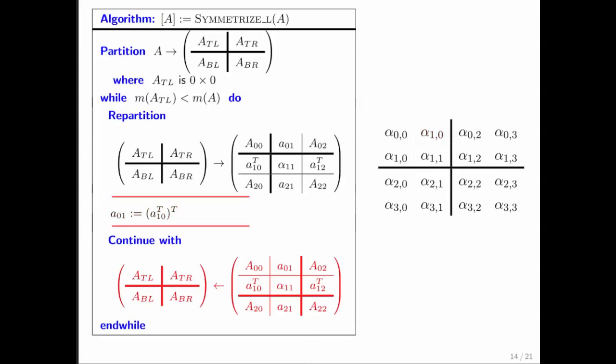Then you move on. You expose again. And now what you notice is that what we would like to do is set this entry equal to this entry, and that entry equal to that entry. Alternatively, you can think of that as this row vector needs to be transposed and overwrite this column vector right here. That's what this update does right there.